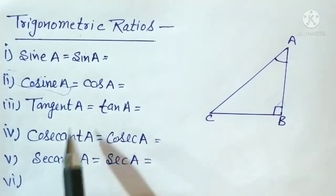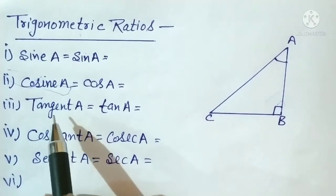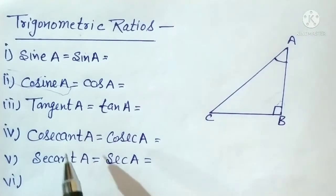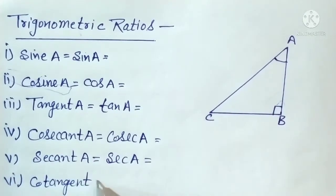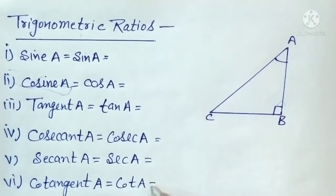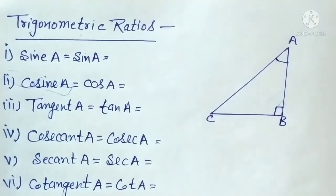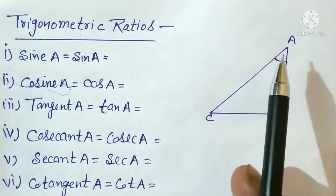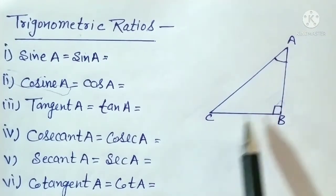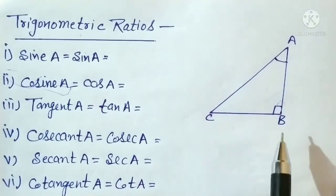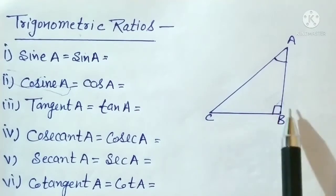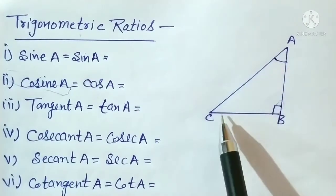And last, we have cotangent A — which is the reciprocal of tangent A. Now, to find trigonometric ratios, we first need to identify which side is the hypotenuse, which is perpendicular, and which is the base. The side opposite the 90 degree angle will be the hypotenuse. So, AC is the hypotenuse.